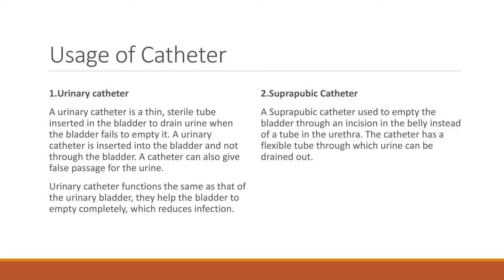Usage of catheter — Urinary catheter: A urinary catheter is a thin, sterile tube inserted in the bladder to drain urine when the bladder fails to empty it. It is inserted into the bladder and not through the bladder, and can also provide a passage for urine. A urinary catheter functions the same as the urinary bladder, helping it empty completely, which reduces infection.